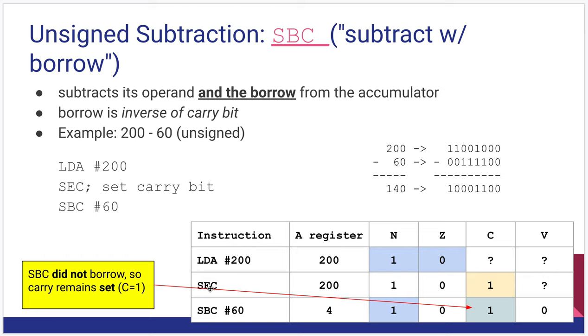We're going to set the carry, SEC, so that my carry starts out at one, meaning I have a borrow of zero. So I'm not borrowing anything to subtract out right now. Then I do my subtract with carry or subtract with borrow from 200, and that gives me 140 in that register. So my result in the A register is 140 here, and note that the carry flag remains at one. Because it remains at one, that means a borrow was not generated for this.